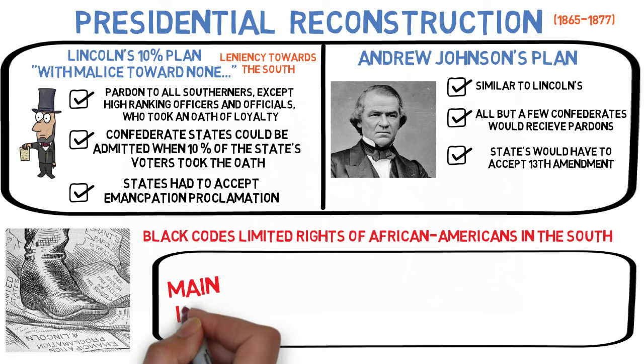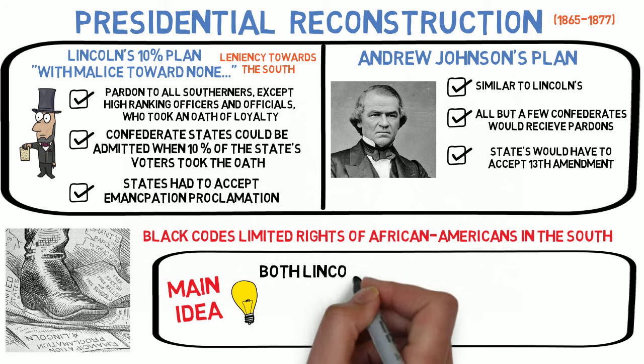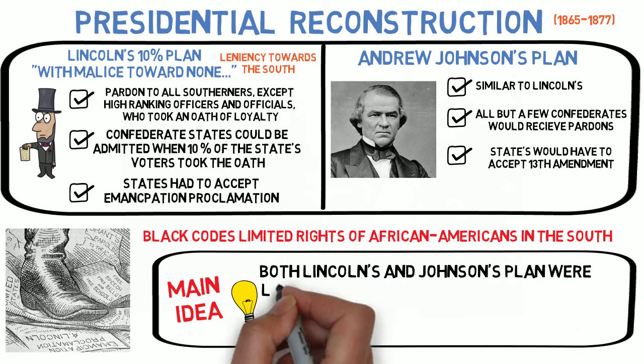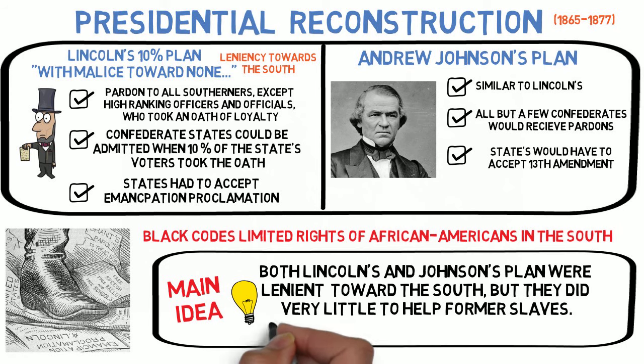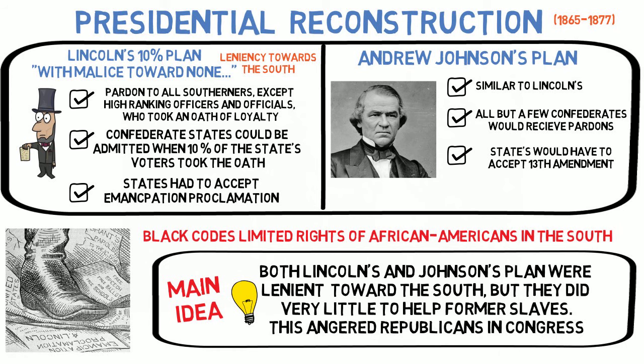Presidential Reconstruction was an attempt to restore the Union as quickly as possible. However, it did not address the issue of civil rights. Life for freedmen in the South did not change very much, and the South looked much the same as it did before the war. Radical Republicans in Congress were outraged at this situation and became determined to change the course of Reconstruction. This set them at odds with President Johnson — and we all know what happens when Congress gets upset with the President. That's right: impeachment.